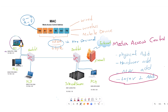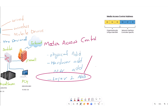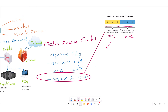As discussed, it is a Data Link Layer address in the OSI model and it is divided into two parts. The first part is OUI or Organizationally Unique Identifier, and the second part is NIC or Network Interface Card. The first three bytes or 24 bits represent the OUI, which is assigned to manufacturers and defines the manufacturer, such as TP-Link, Cisco, or Netgear.